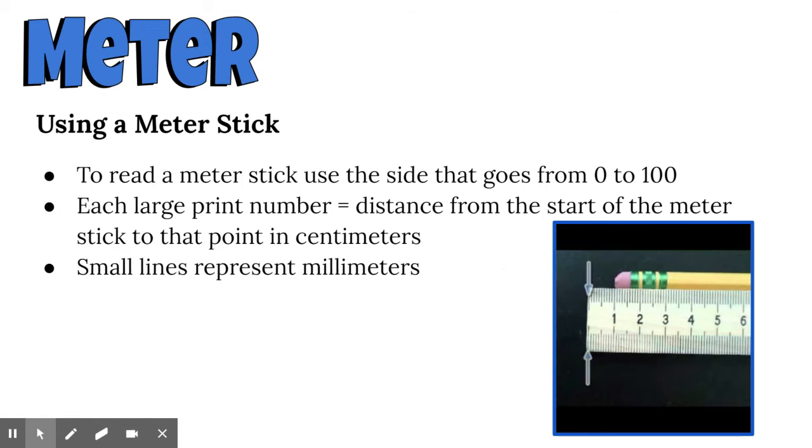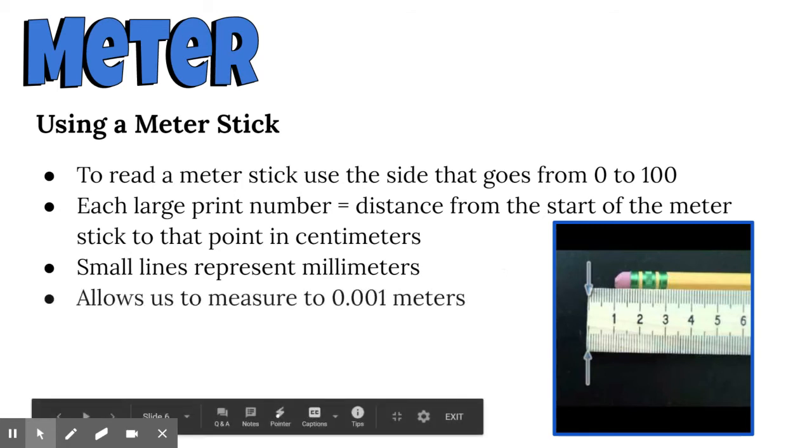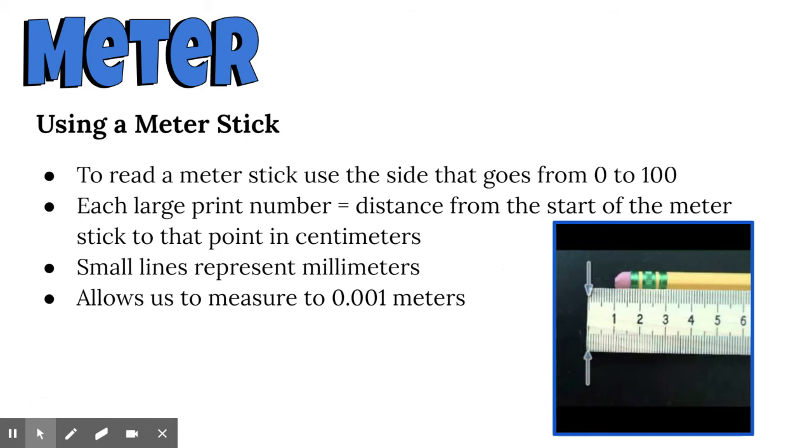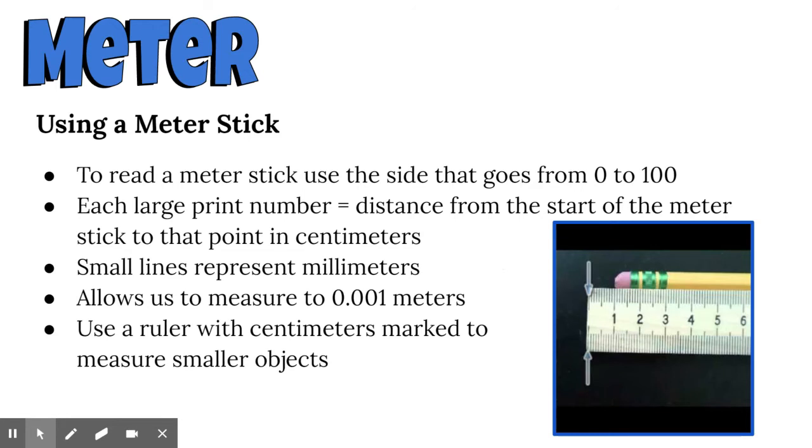The small lines represent millimeters, which are one one-thousandth of a meter. There's a thousand millimeters on each meter stick. You can measure the pencil in centimeters or the eraser in millimeters, which would be really appropriate terms. A meter stick is pretty accurate, allowing us to measure to 0.001 meters or one one-thousandth of a meter. For really small things, it'd be more appropriate to use a metric ruler with centimeters and millimeters marked on it.